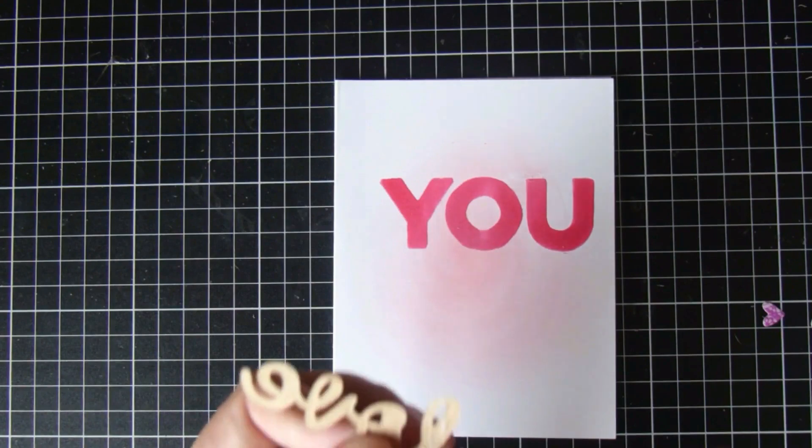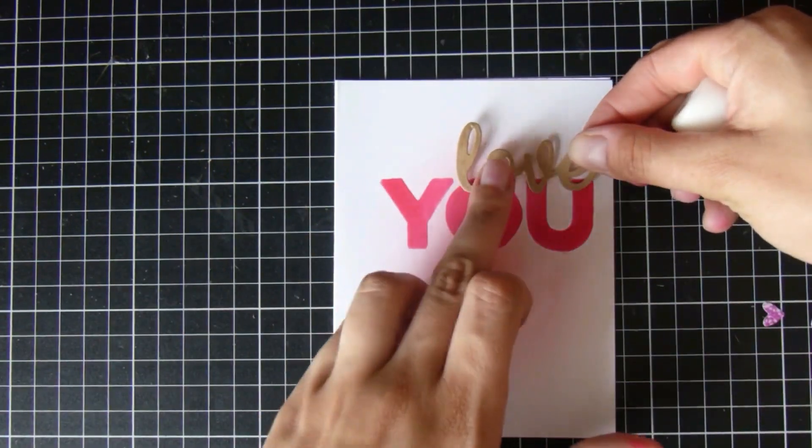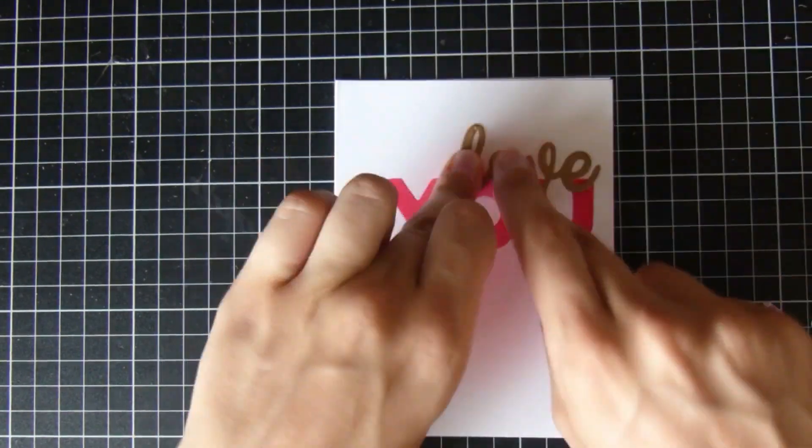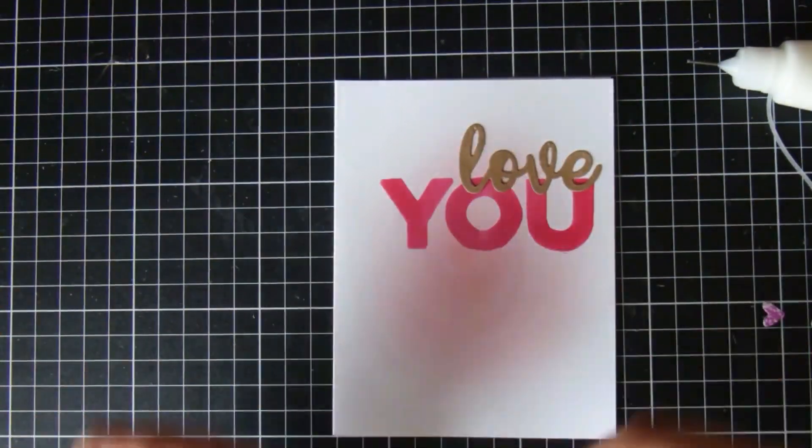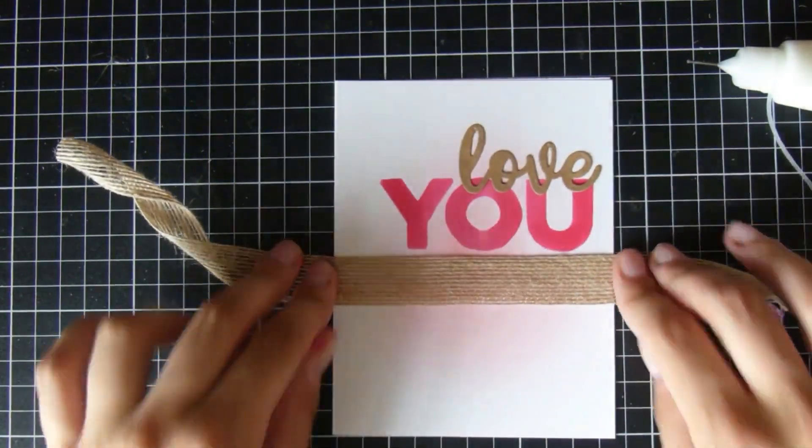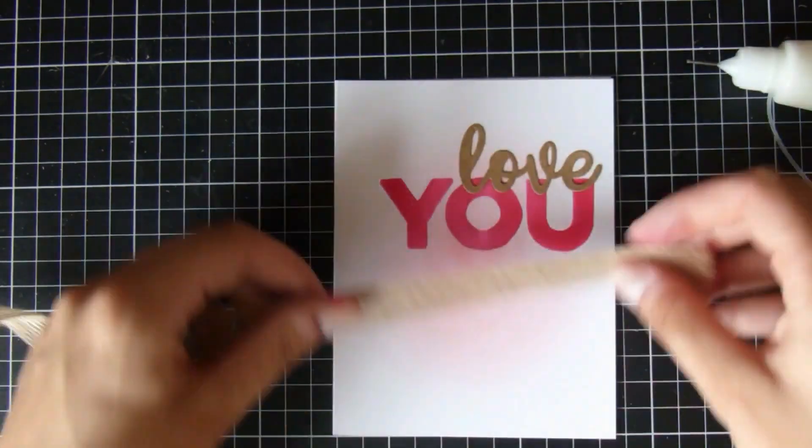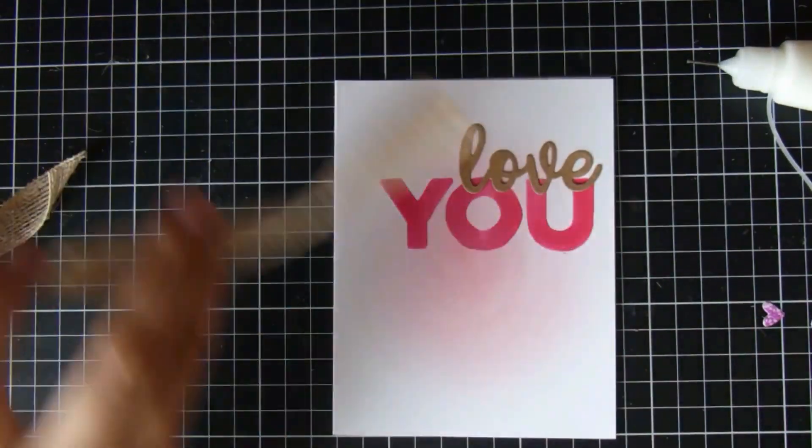Just using some Multi-Matte Medium—that's from Ranger, and it's just in a little fine tip bottle. And then again, I'm just going to use the same glue to put down this piece of burlap ribbon, still trying out deciding which way that I want it to go on the card.